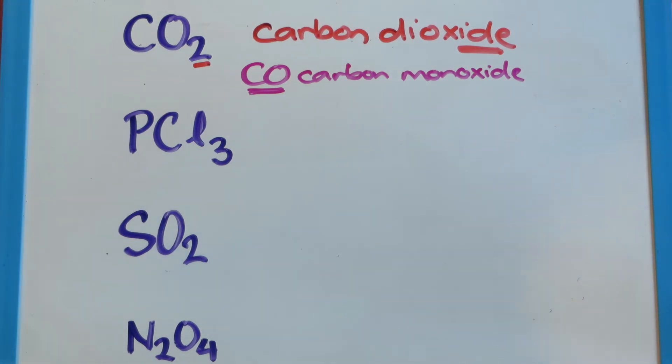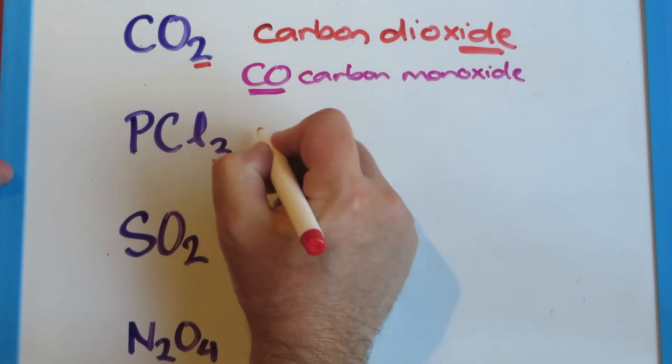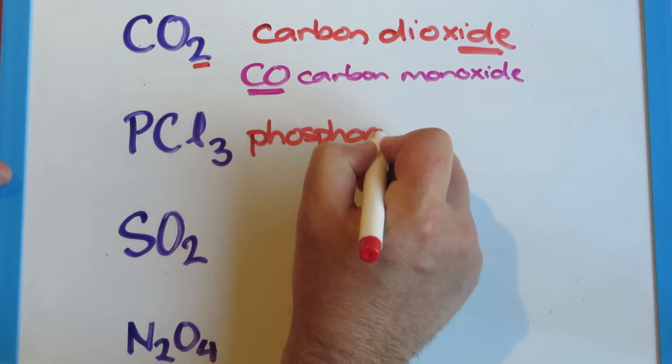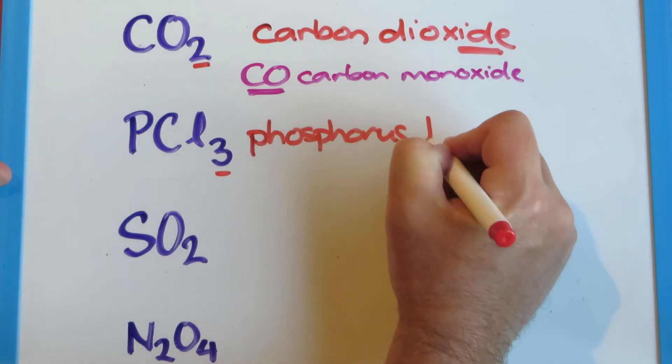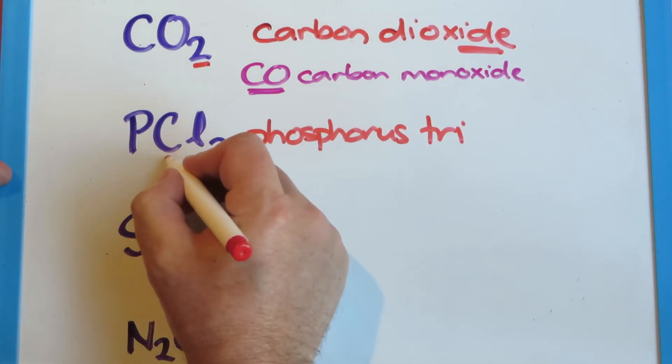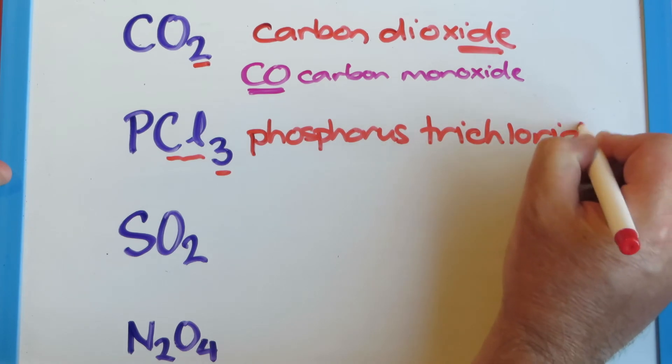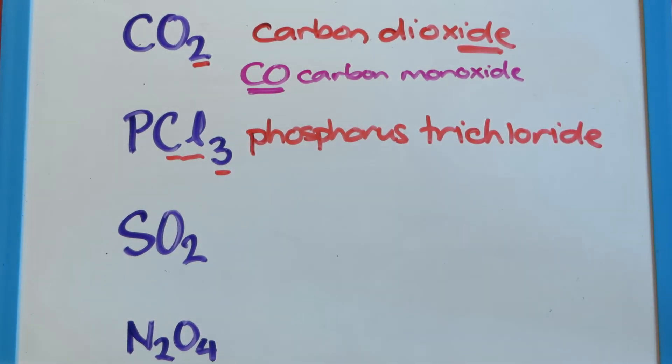The next one is one of the two chlorides of phosphorus. Again, non-metal, non-metal. So we start with phosphorus, the first element. And then we see that there's three, so it's tri, and then it's chlorine, so trichlor, and we end it with ide, just like an ionic compound. So phosphorus trichloride.